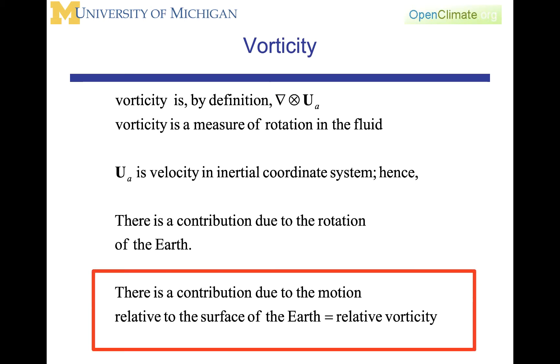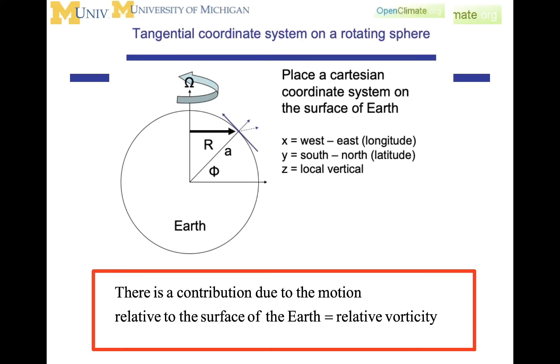This is an important distinction to make: the difference between the vorticity due to the rotation of the earth and the relative vorticity, which is the motion relative to a point on the earth or in the tangential coordinate system which we use, where the vertical is the local vertical at whatever point we might be observing.